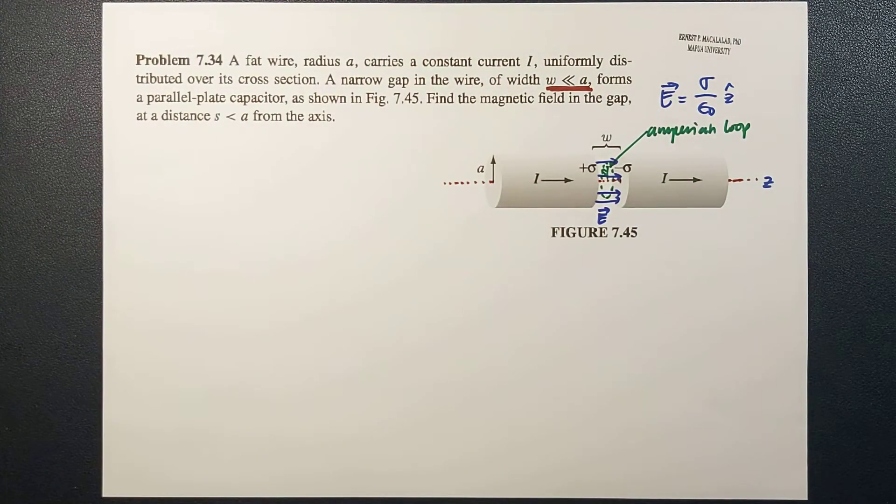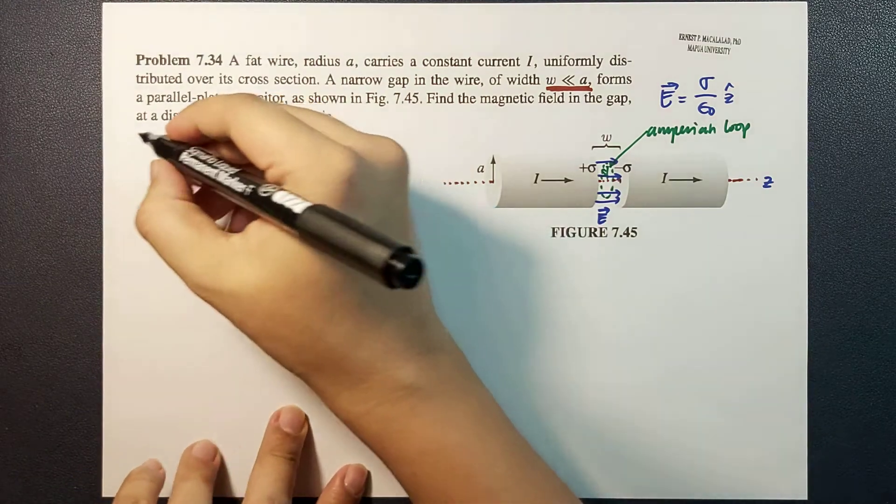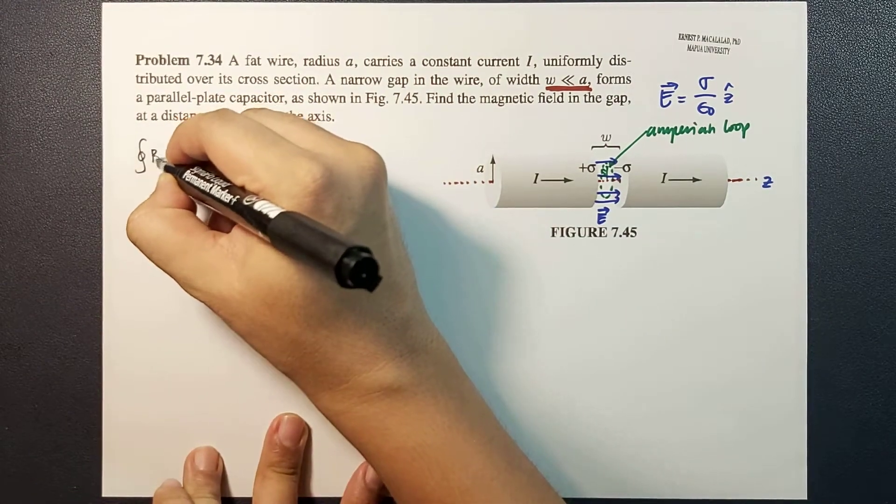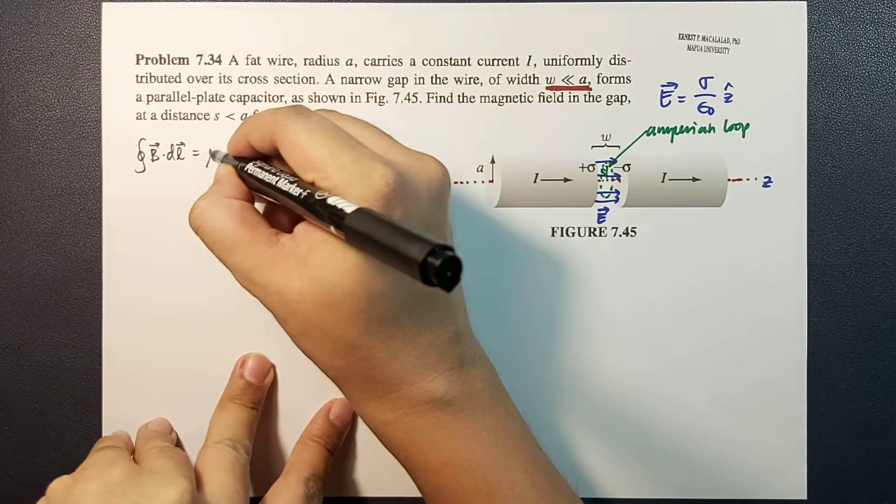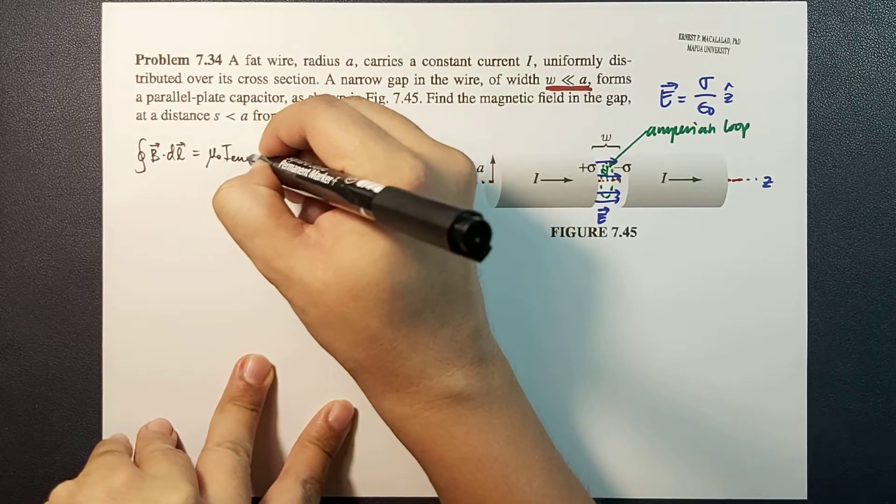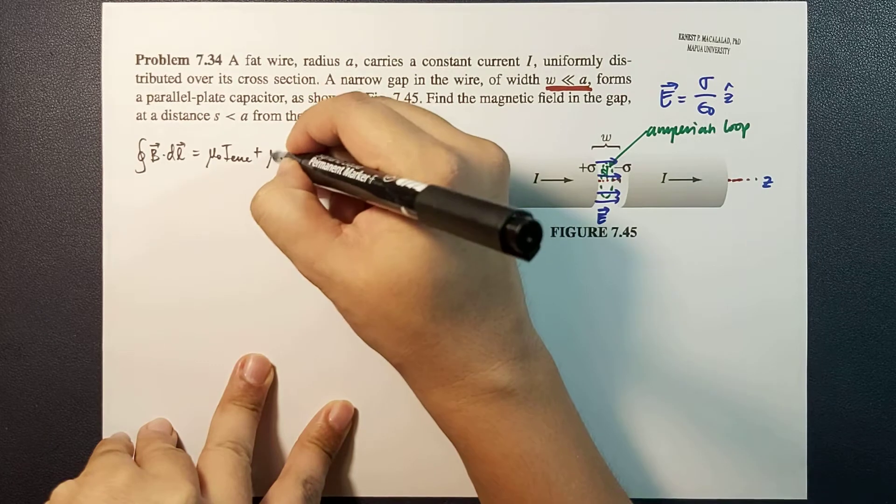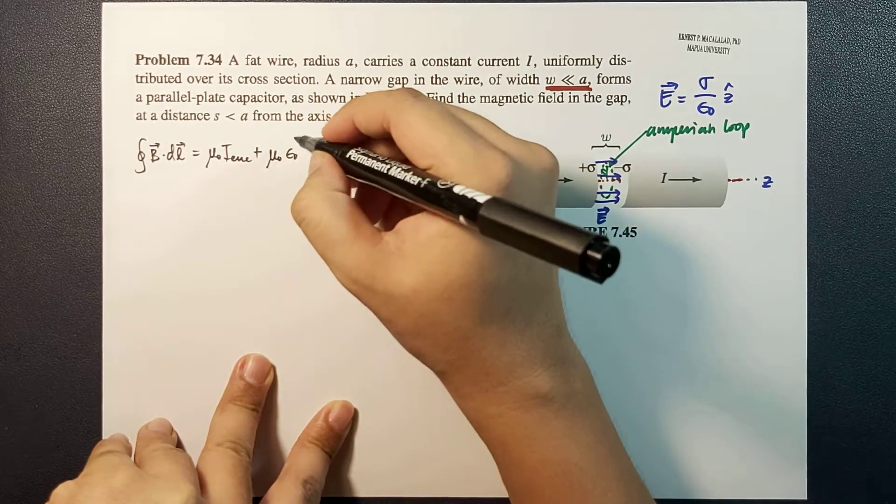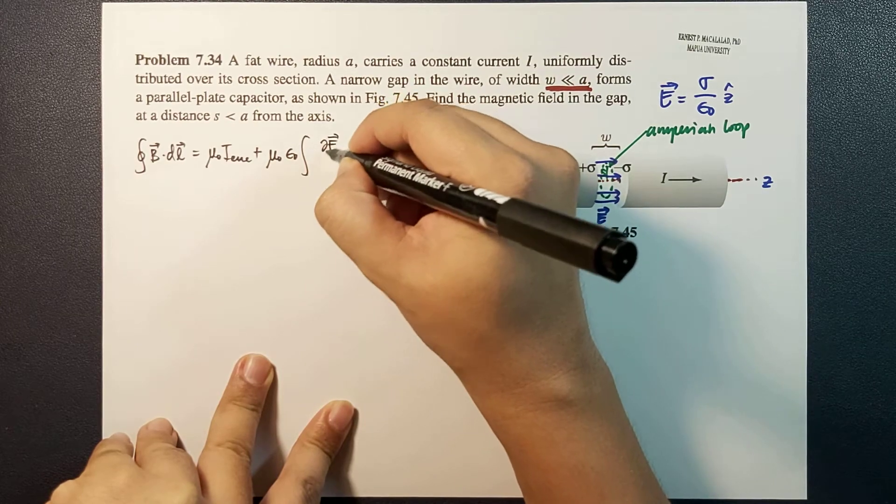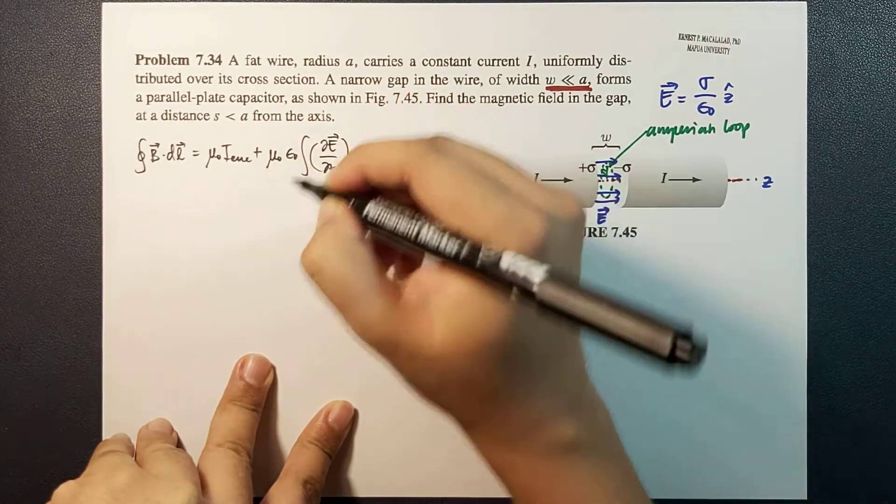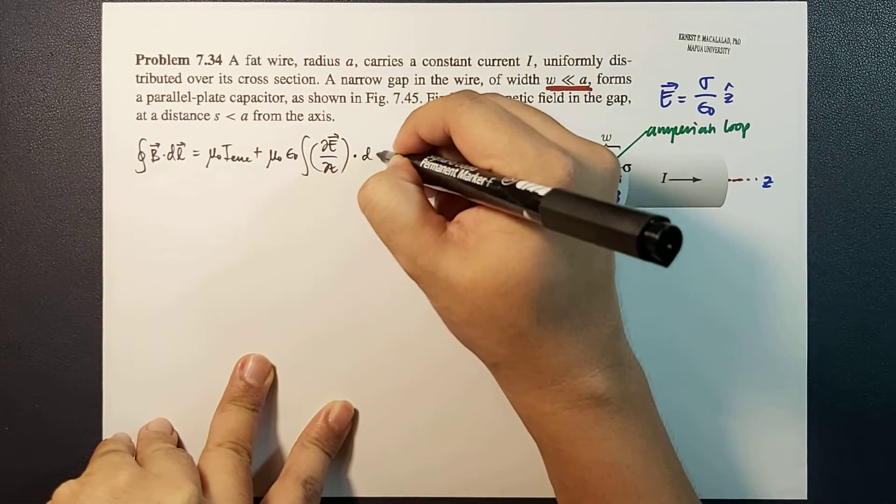Okay, let's apply Ampere-Maxwell's law, which is written as the closed integral of B dot dL equals mu naught I enclosed plus mu naught epsilon naught times integral of the partial derivative of the electric field with respect to time, dot dA.